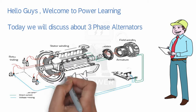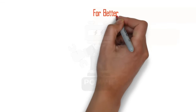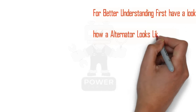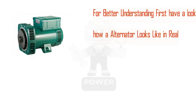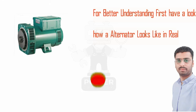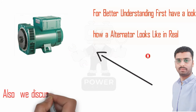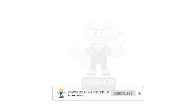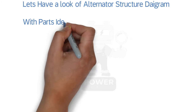You will see now on the screen for better understanding. First, have a look at how an alternator looks in real life. Here is a picture. Don't forget to like, share, and subscribe to our channel. This is the real look of the alternator. We will also discuss three different types of excitation systems used in alternators. Let's have a look at the alternator structure diagram with parts identification.